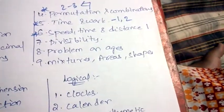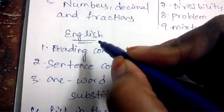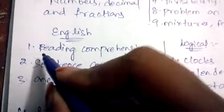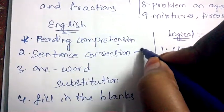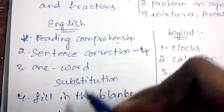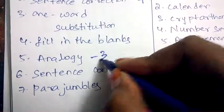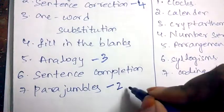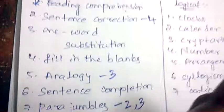These are the topics which will be covered under written test pattern of quantitative aptitude. Now let's see the syllabus under verbal or English. Coming to English, reading comprehension is very important. Sentence correction - four questions will be asked. One word substitution, fill in the blanks, analogy - three will be asked. Sentence completion, para jumbles - two to three will be asked. You need to concentrate mainly on reading comprehension.